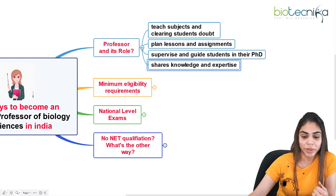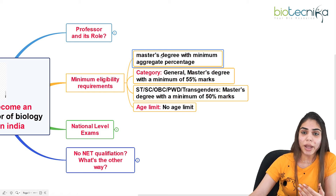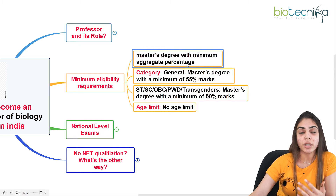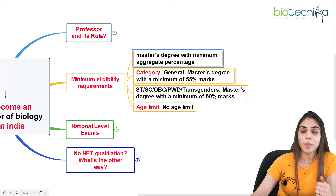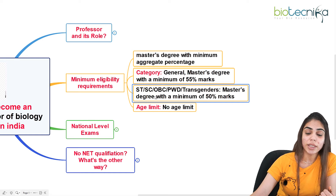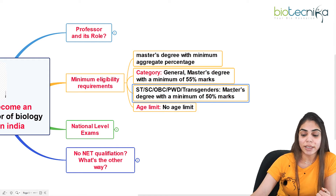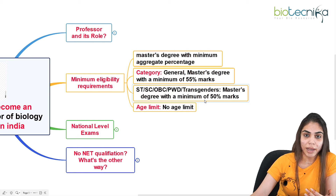Now, what are the minimum eligibility requirements to become an assistant professor in India? You need a master's degree with a minimum aggregate percentage. For general category candidates, the requirement is a master's degree with at least 55% aggregate. For reserved categories — SC, ST, OBC, PwD, or transgender — the minimum aggregate required is 50%.